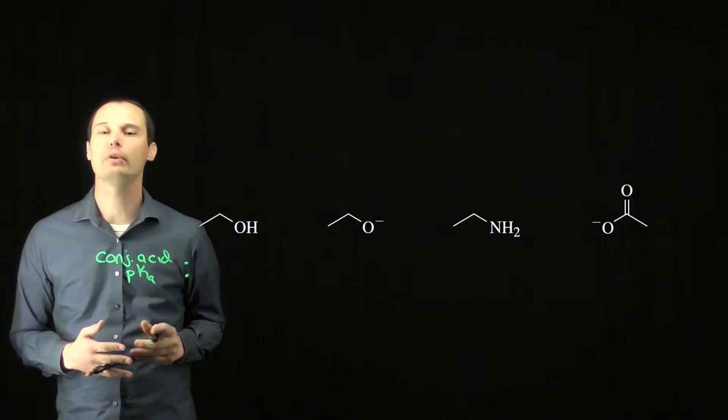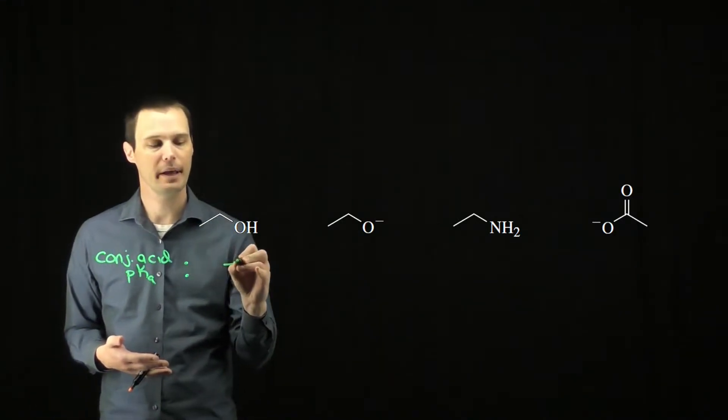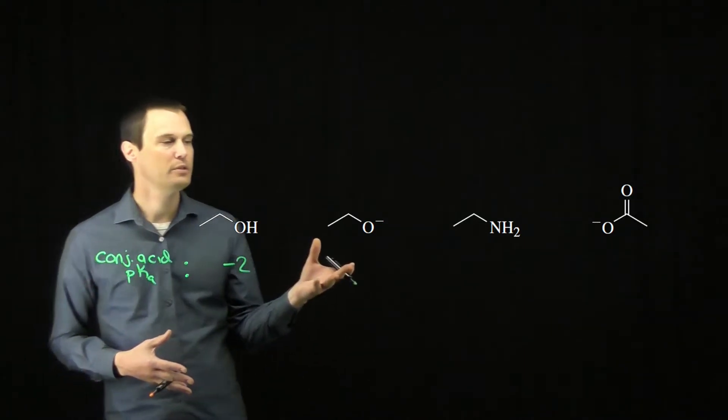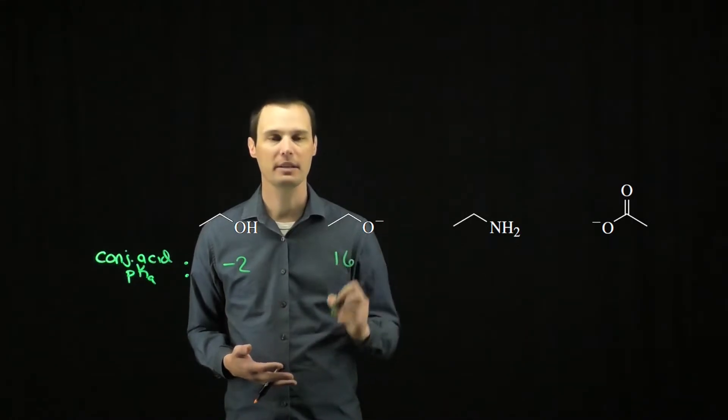So for this first molecule, a neutral alcohol, its conjugate acid would be a protonated alcohol. Protonated alcohols have a pKa of around negative 2. The second molecule is an alkoxide. The conjugate acid would be an alcohol. Alcohols have a pKa of approximately 16.